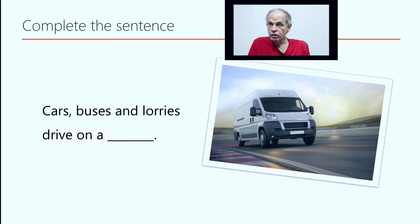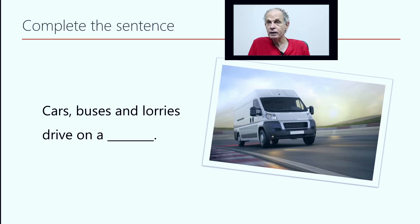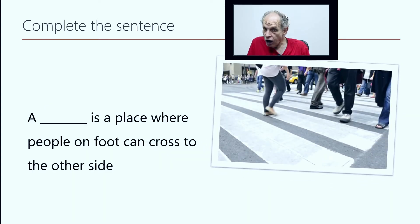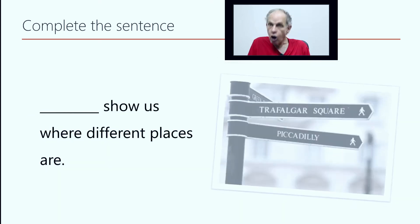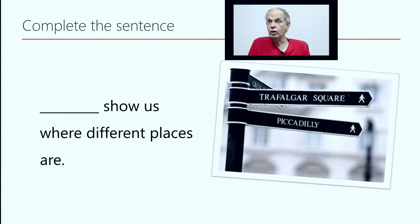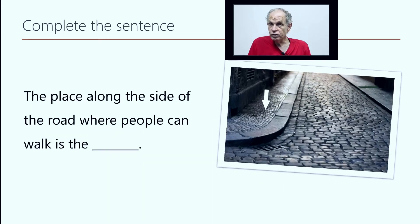Cars, buses, and lorries drive on a road. A crossing is a place where people on foot can cross to the other side. Signposts show us where different places are. The place along the side of the road where people can walk is the pavement.